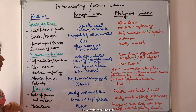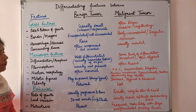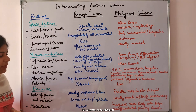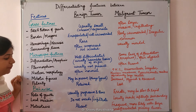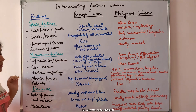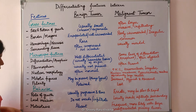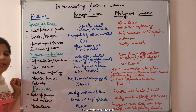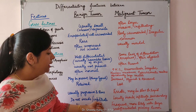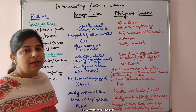Behavior: the rate of growth is usually slow and progressive in benign tumors, whereas it is erratic and can be slow to rapid in malignant tumors. Local invasion: benign tumors do not invade or infiltrate, whereas malignant tumors locally invade and infiltrate the surrounding tissue. Metastasis is absent in benign tumors, whereas it is frequent in malignant tumors, and more likely with large undifferentiated primary tumors.